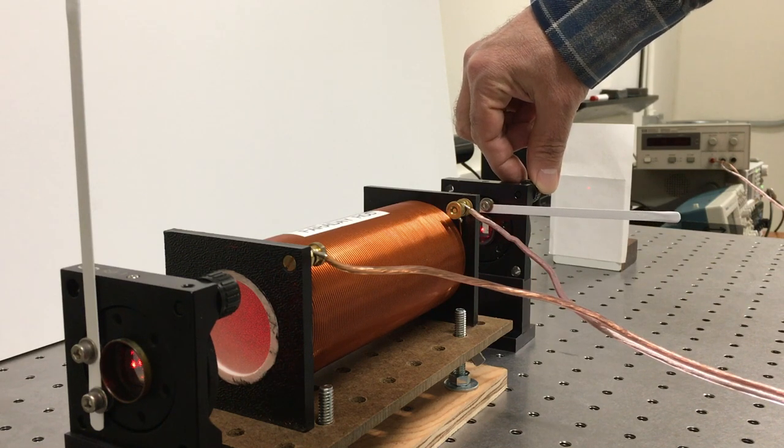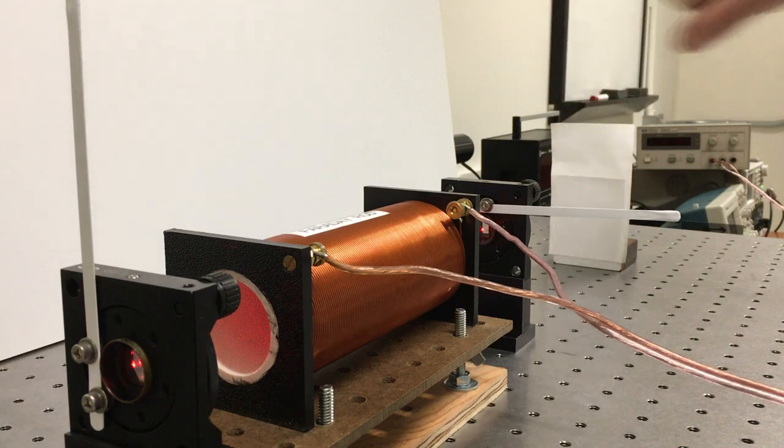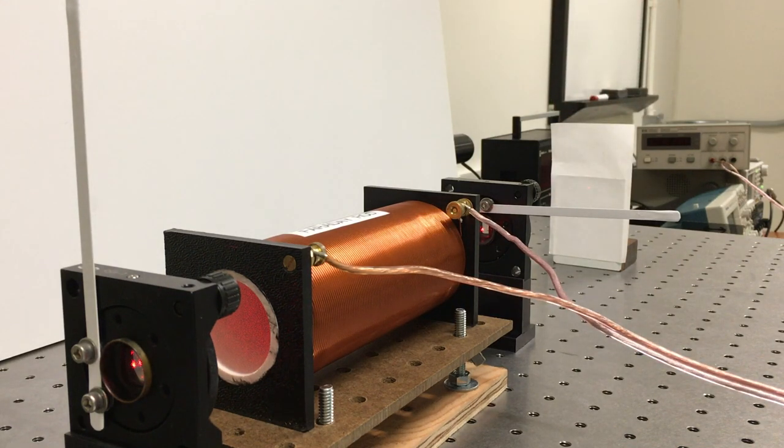No matter how crossed I get the polarizers, even when they're 100% crossed, a tiny bit of light leaks by. So the glass rod itself is probably very slightly birefringent.